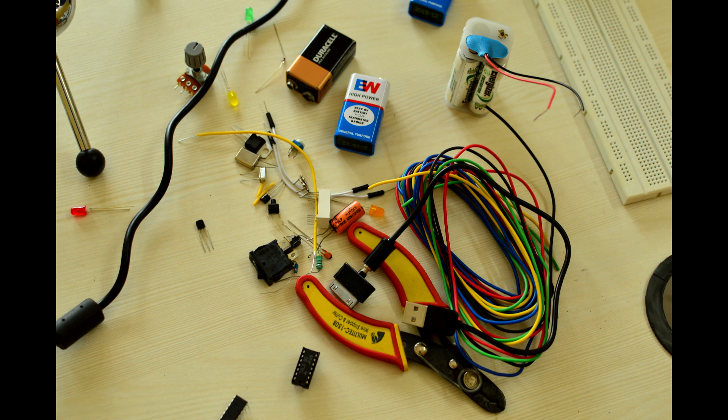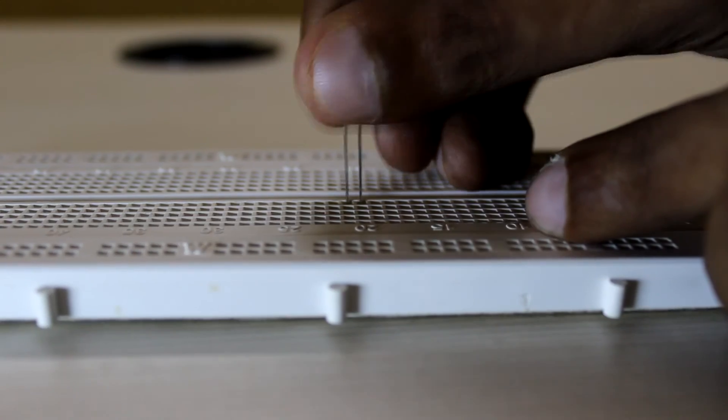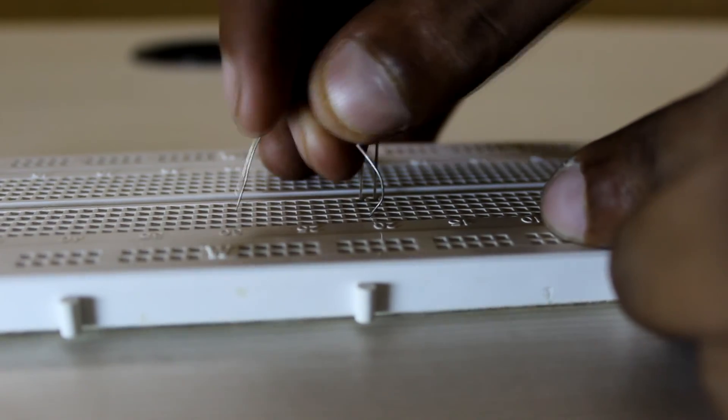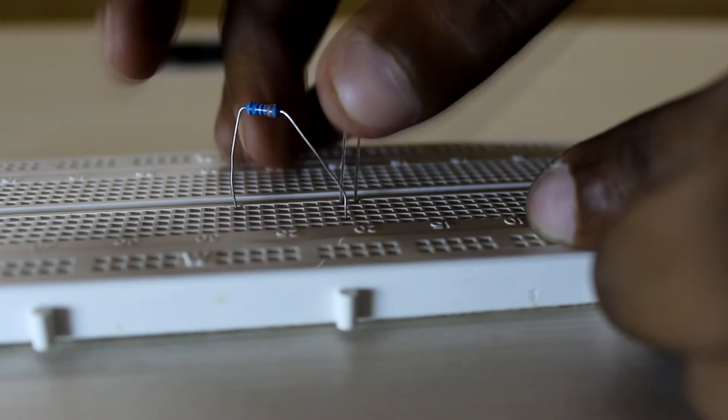So in this video we saw some basic components used in electronic circuits. In the next video we will use these components to build our first electronic circuit.